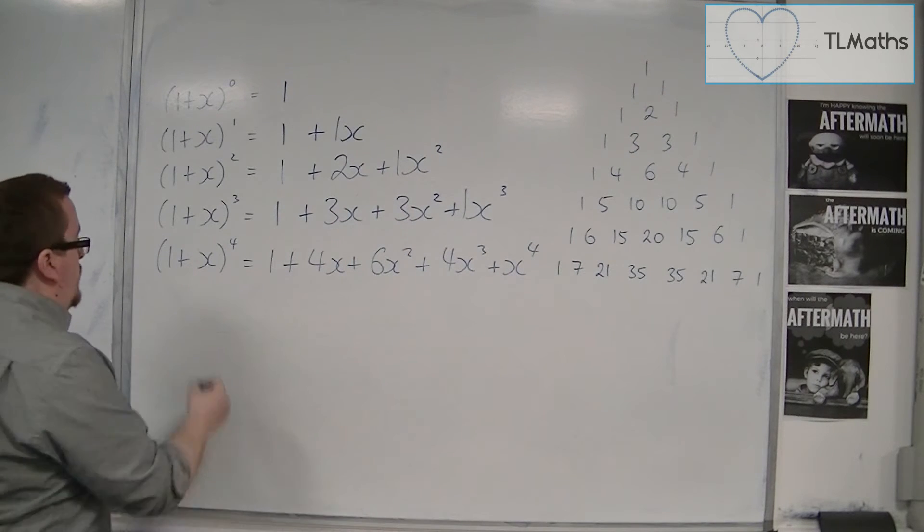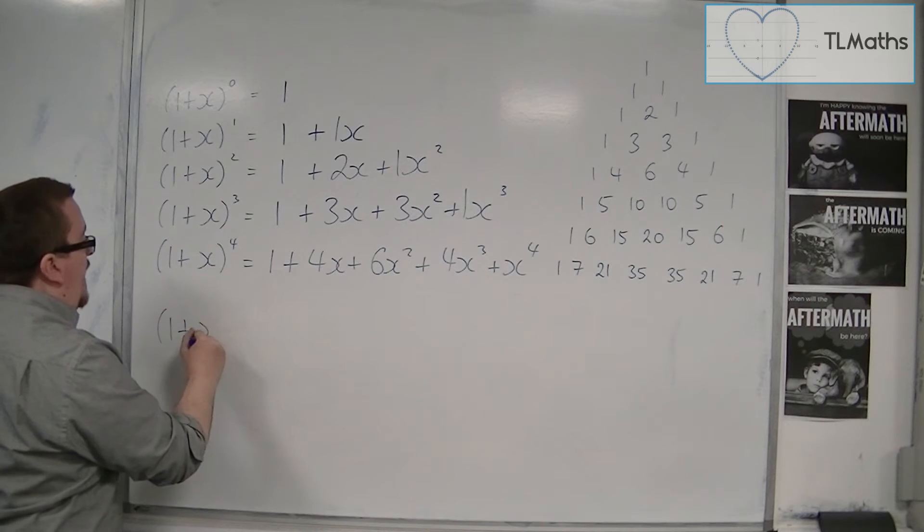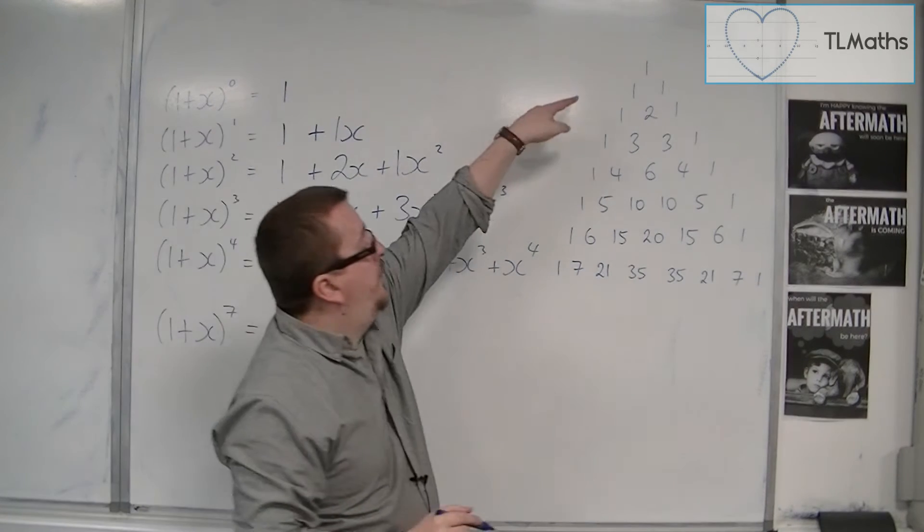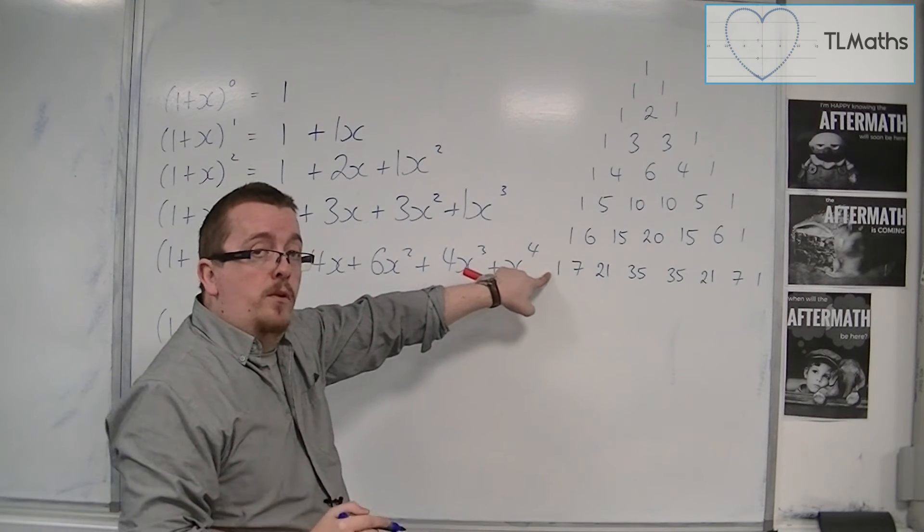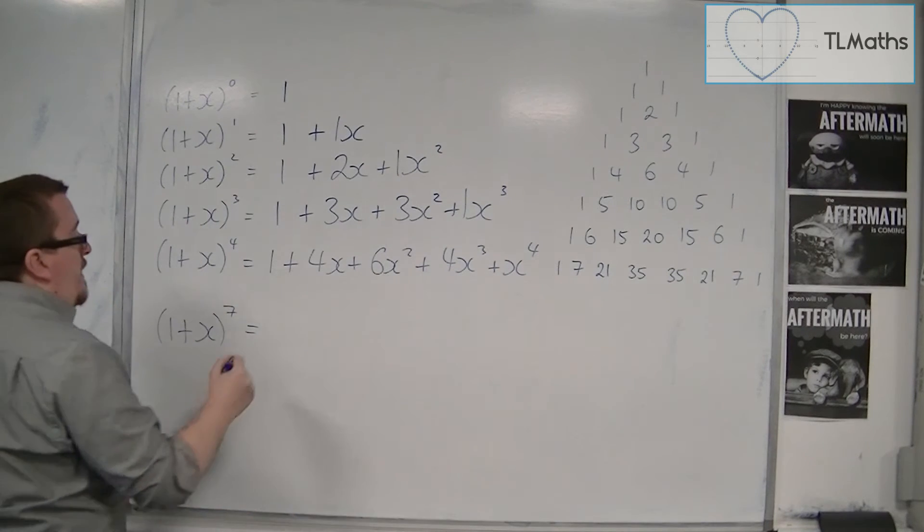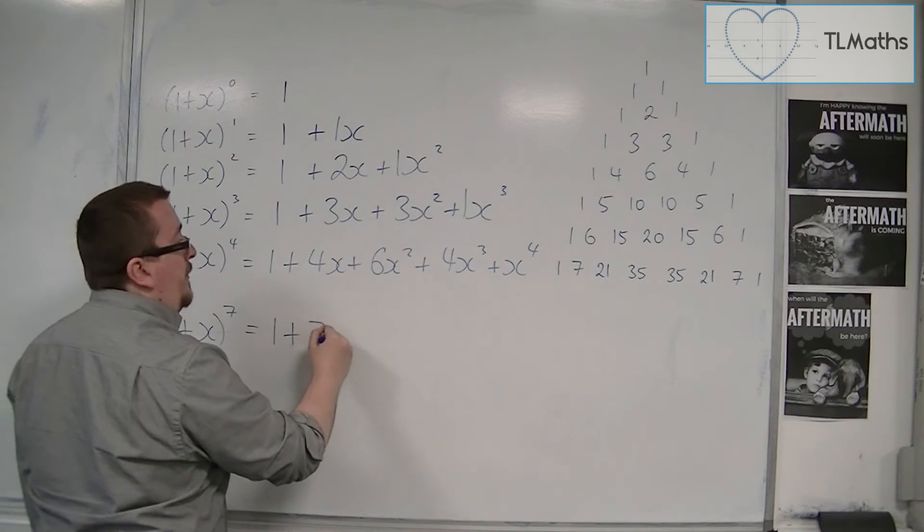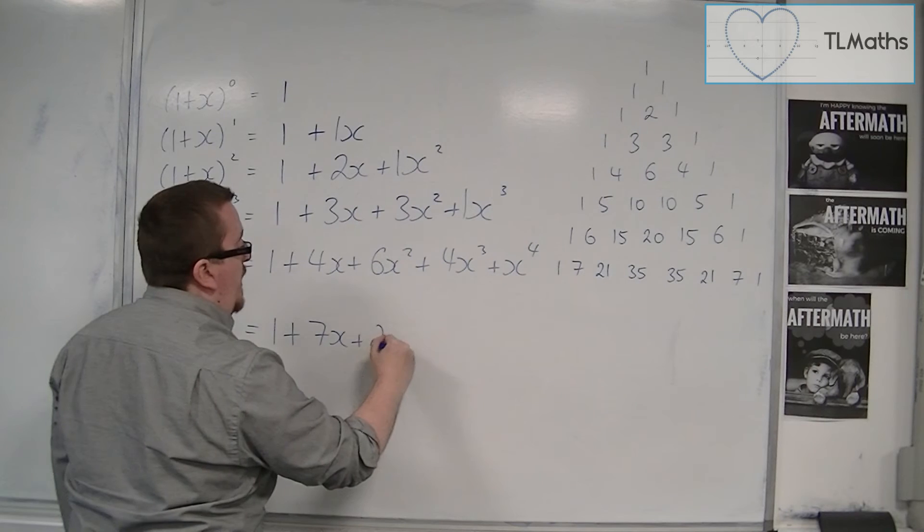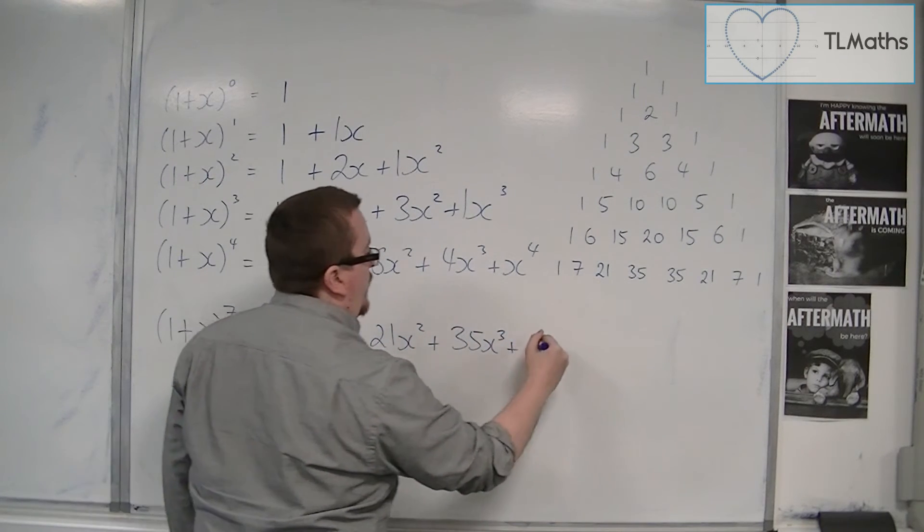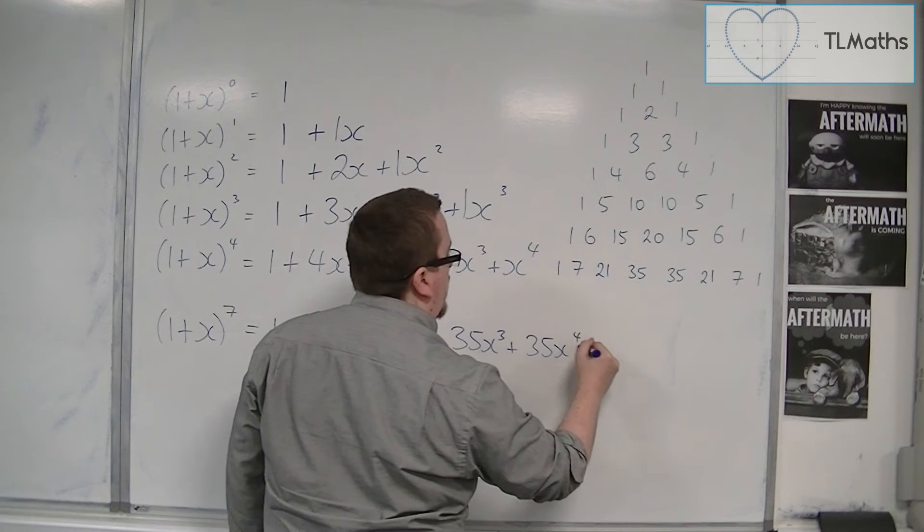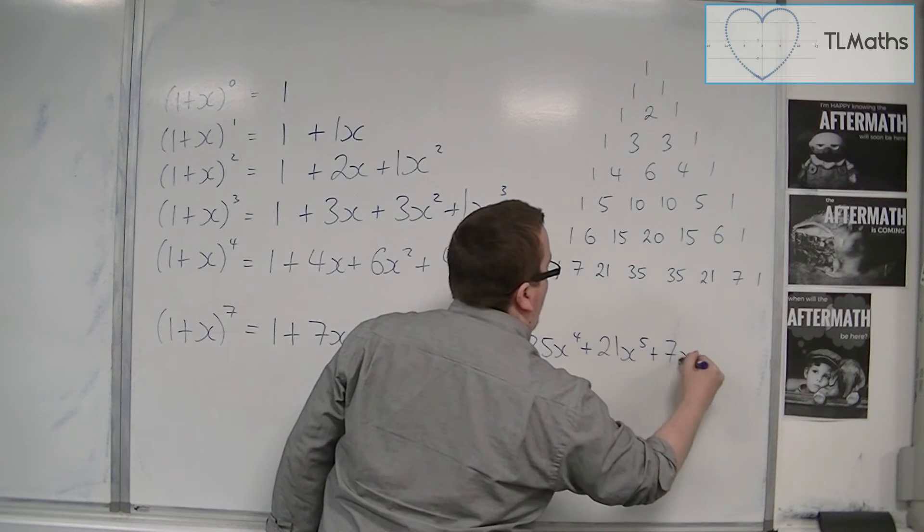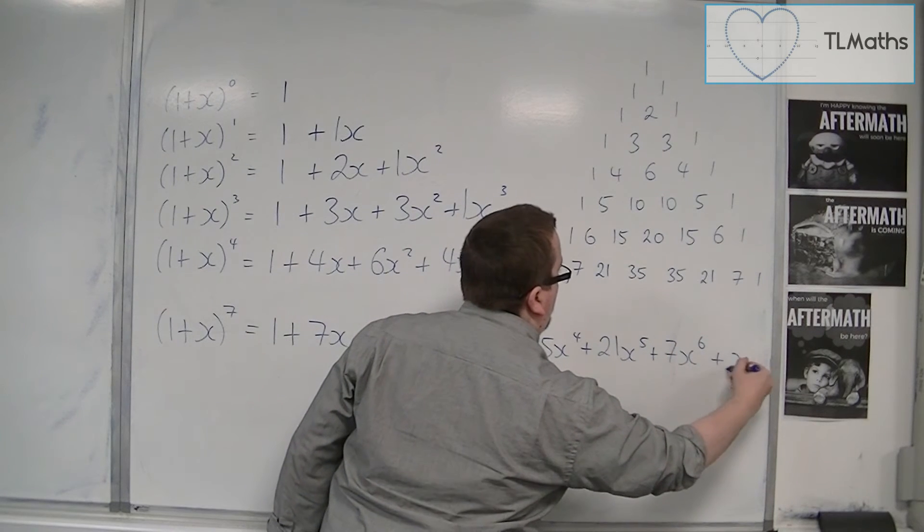So then if I wanted to expand 1 plus x to the power of 7, then I could go down to the 7th row, which is identified by that second number in. And then we could go, right, that's 1 plus 7x plus 21x squared plus 35x cubed plus 35x to the 4 plus 21x to the 5 plus 7x to the 6 plus x to the 7.